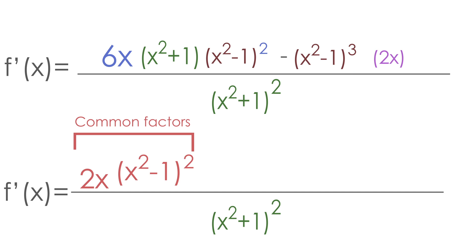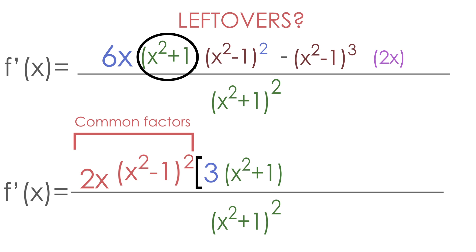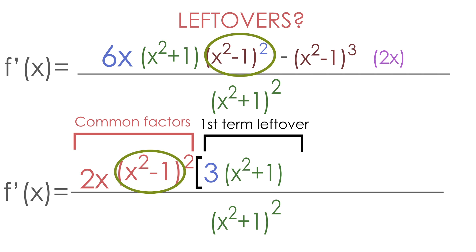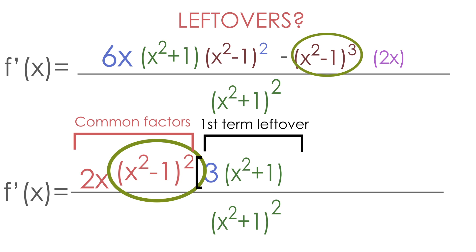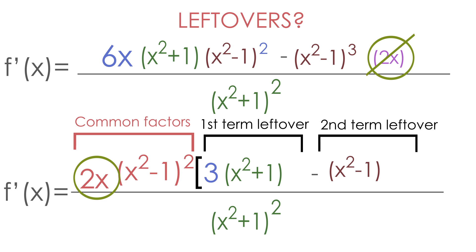After factoring, let's see what's left in each term. In the first term, we started with 6x but factored out 2x, leaving 3. The (x² + 1) stays since we didn't factor it out, and the two (x² - 1) factors go away. In the second term, we had three (x² - 1) factors but removed two, leaving one (x² - 1). The 2x goes away since we factored it out already.